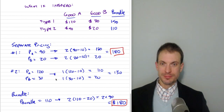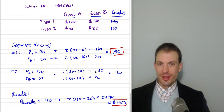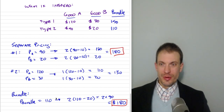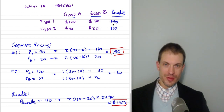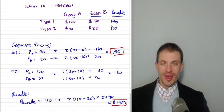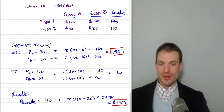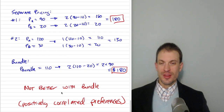Alternatively with separate pricing, if I set prices up to the maximal willingness to pay, I'm ignoring my type 2 consumer and profits drop to $130. Now what if I sell the bundle? If I set the bundle price at $150, I'll sell one bundle and profits are $130 — that's 150 minus marginal cost of $20. If I set the bundle price at $110, I'll sell to both consumers: 2 × (110 − 20) = $180. That's exactly the same as separate pricing. With positively correlated preferences, bundling is not better — it's not harmful, just not useful.